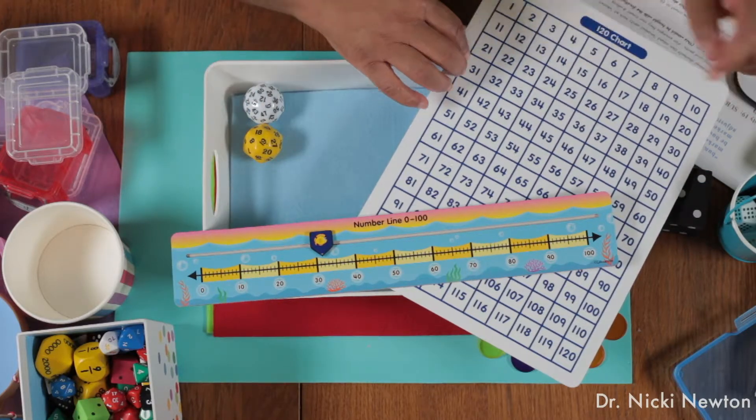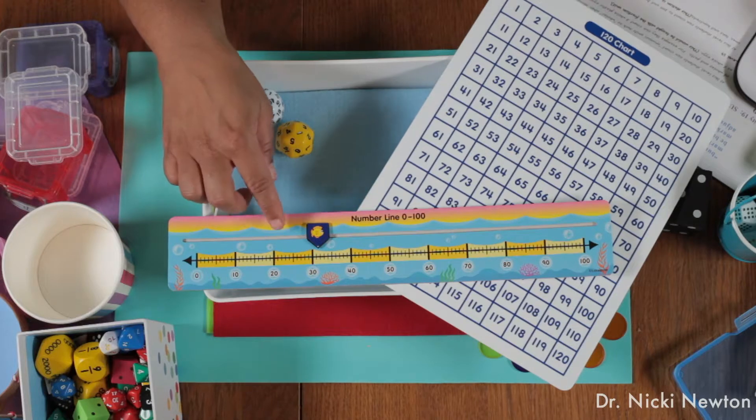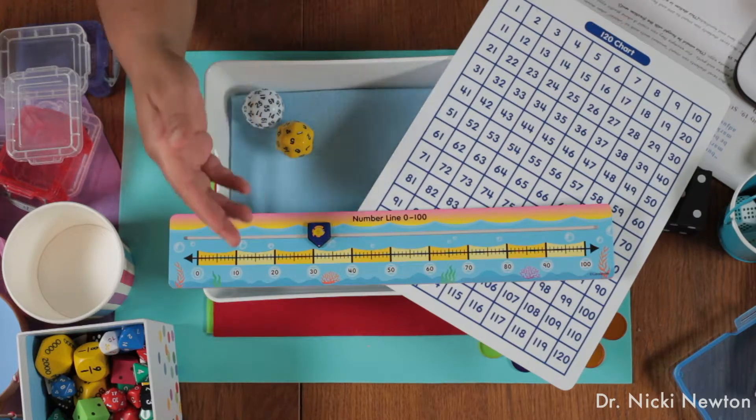They can do that on their hundred grid as well. So the kids could have the dice, and then they could have the number grid and the number line, or they could have the number grid or the number line.